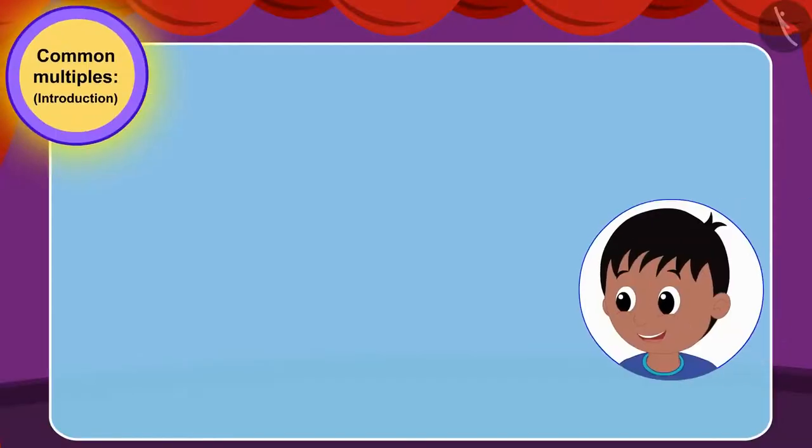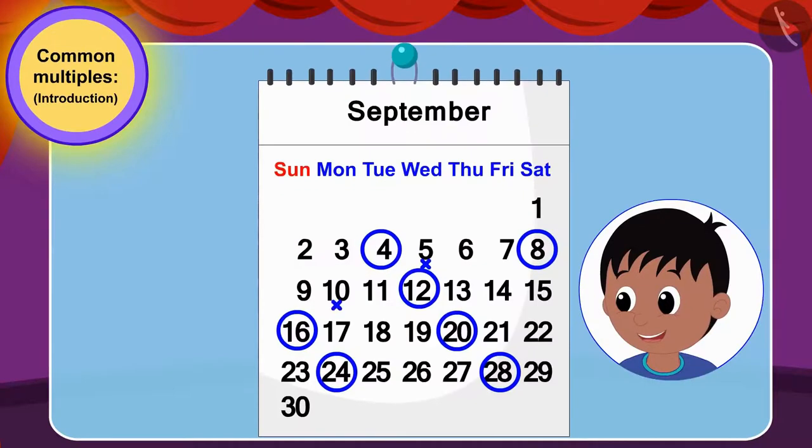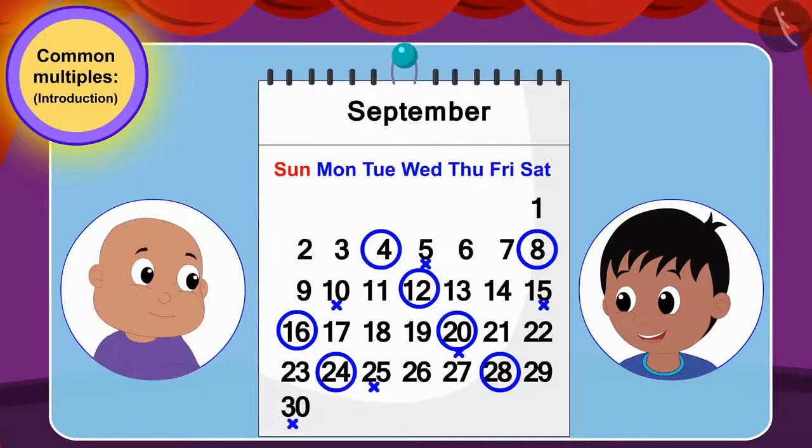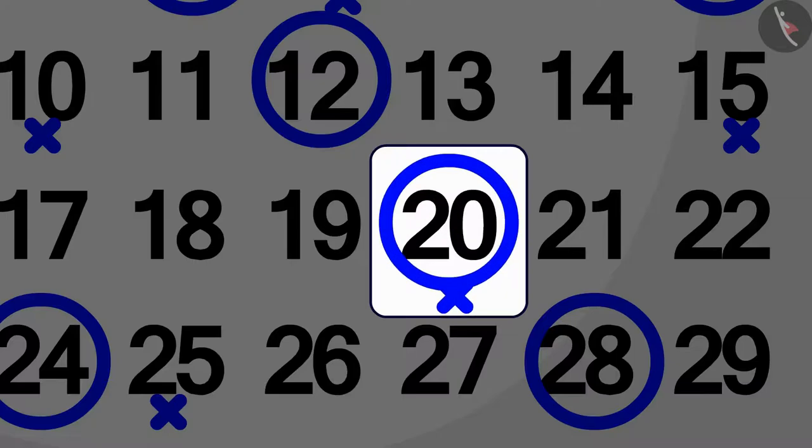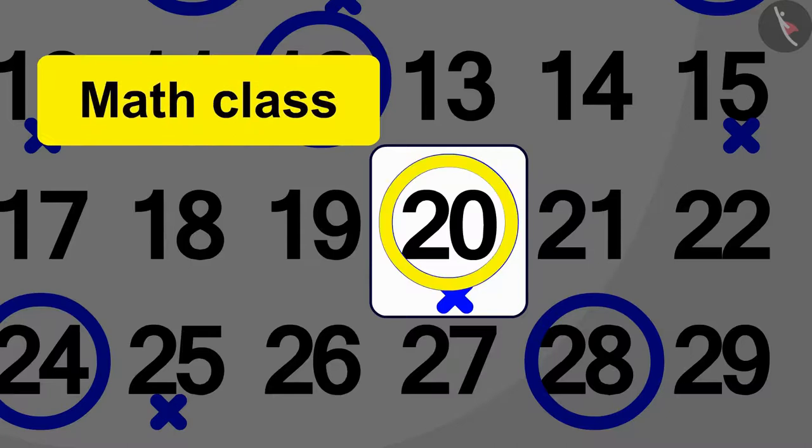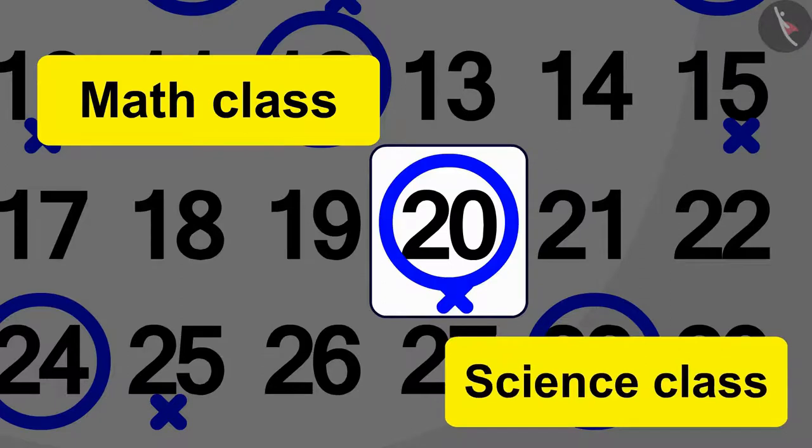Raju excitedly made a mark on the calendar on the dates for Bablu's science class. Now, when Raju and Bablu looked closely at the calendar, they found that on the twentieth, Bablu had made a circle for math class and Raju also made a mark for science class.